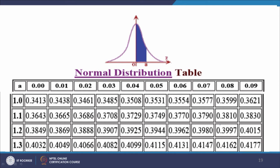From the normal distribution table, 1.23 corresponds to a value of 0.3907. However, this is the value of the shaded area from the center. What we are concerned with is the tail area. Therefore, we subtract 0.3907 from 0.5 and arrive at the required value of 0.1093.